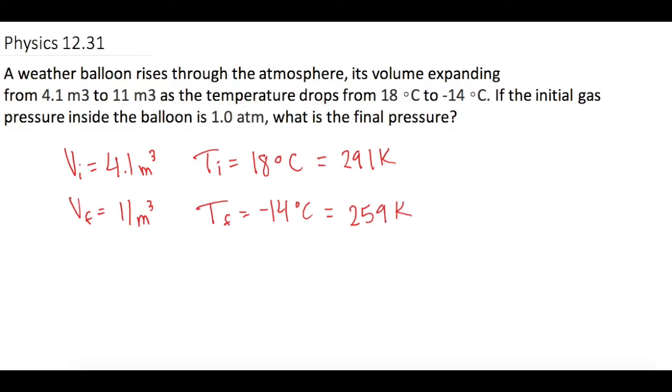Now they tell us the initial pressure inside the balloon is 1 atmosphere. Normally we would change this to Pascals, but I'm going to show you something with the algebra. If we use the relationship PV over T initial equals P final V final over T final, we want to find final pressure.